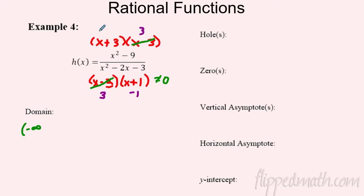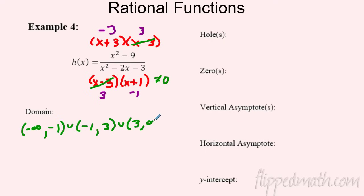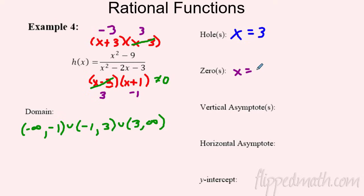Domain doesn't care whether the issue is a hole or a vertical asymptote — it just knows there's a problem. So the domain is from negative infinity to negative one, union negative one to three, union three to infinity. There is a hole at x = 3 because that factor canceled. Holes can't be zeros, so the zero comes from the remaining numerator factor x + 3, giving x = -3 as our x-intercept.